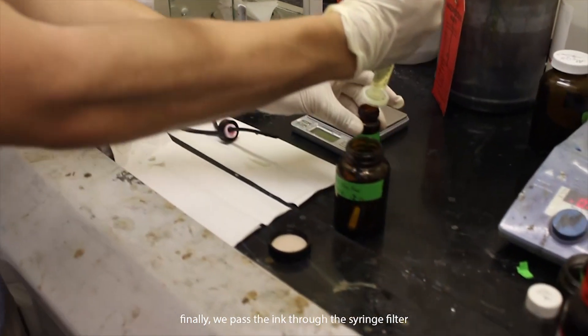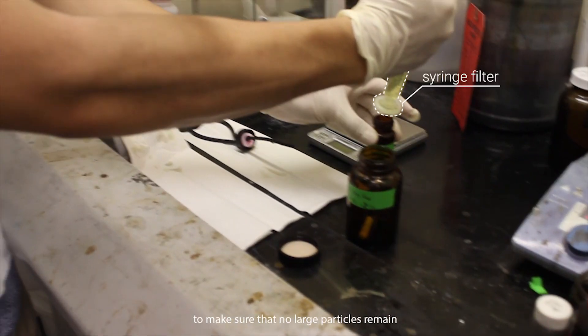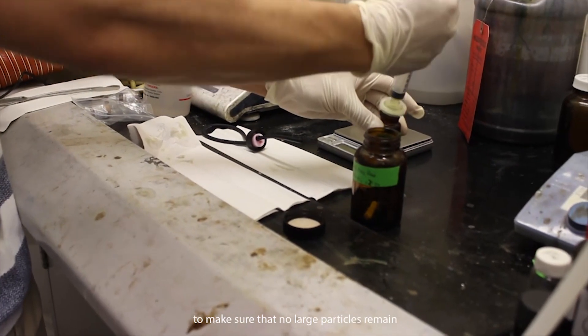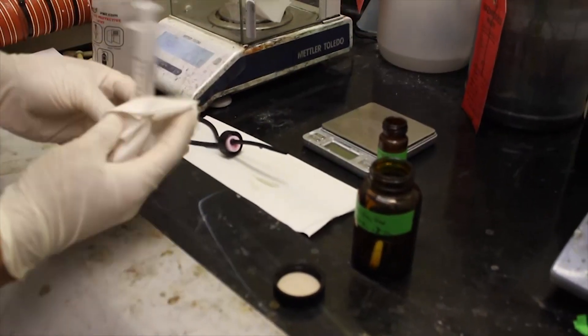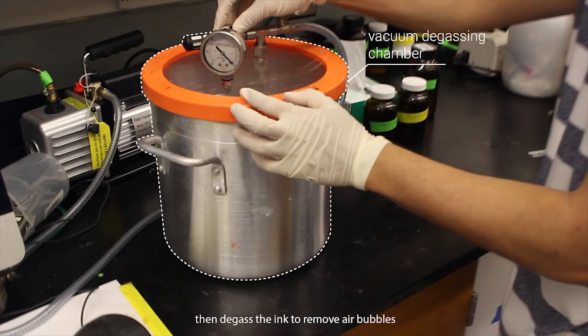Finally, we pass the ink through the syringe filter to make sure that no large particles remain. Then degas the ink to remove air bubbles.